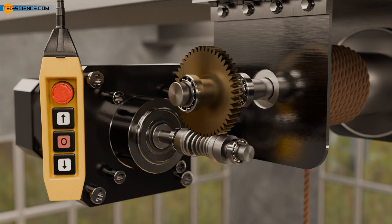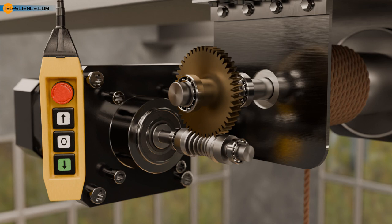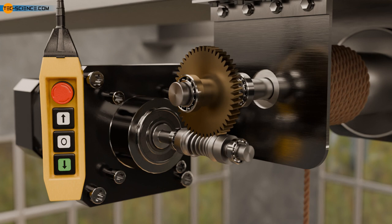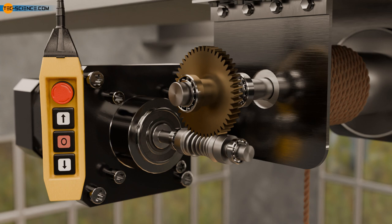However, if this is the case, you will often hear the gearbox rattle. Depending on the application, it may also be necessary to ensure that the gearbox stops automatically when the load is lowered and the motor is turned off. This is referred to as dynamically self-locking or self-breaking.